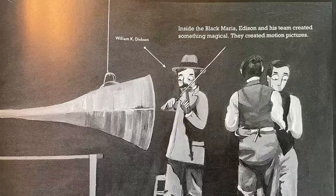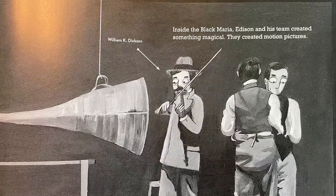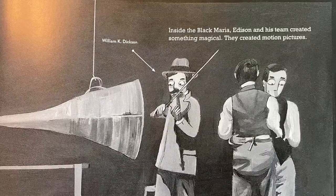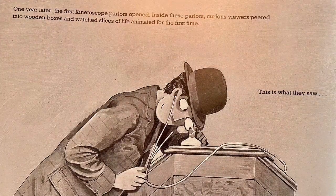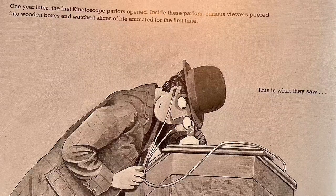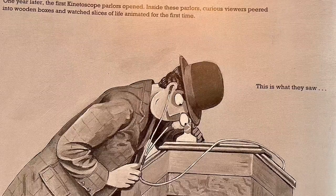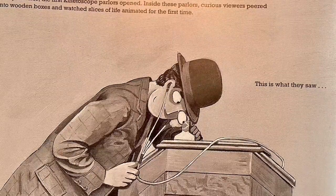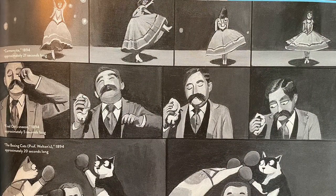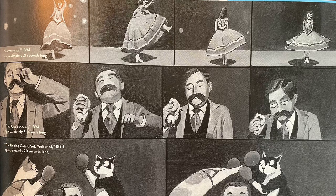Inside the Black Maria, Edison and his team created something magical — they created motion pictures. One year later, the first kinetoscope parlors opened. Inside these parlors, curious viewers peered into wooden boxes and watched slices of life animated for the first time. This is what they saw: Carmencita, 1894, approximately 21 seconds long. Fred Ott's Sneeze, 1894, approximately 5 seconds long. The Boxing Cats, Professor Welton's, 1894, approximately 20 seconds long.